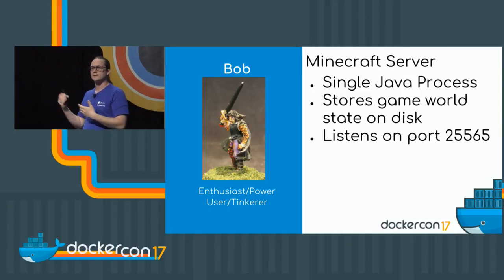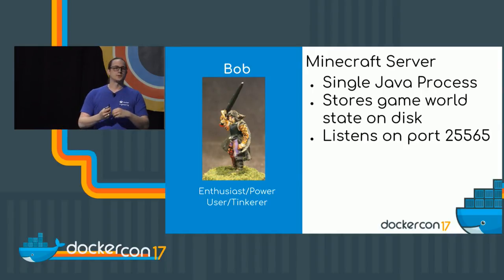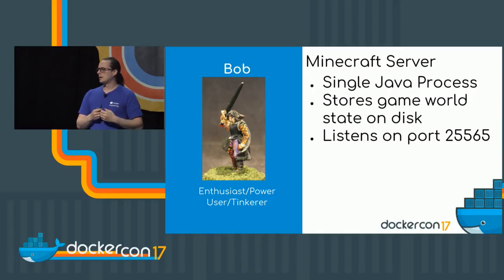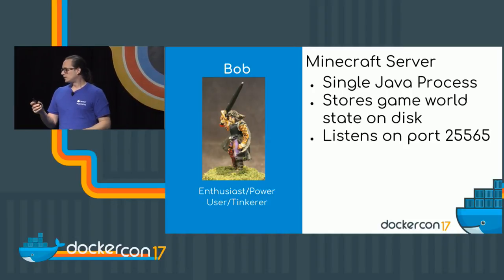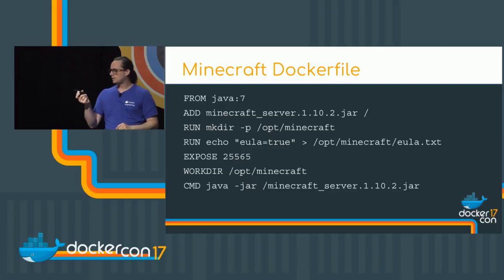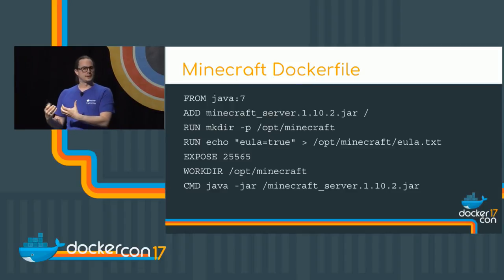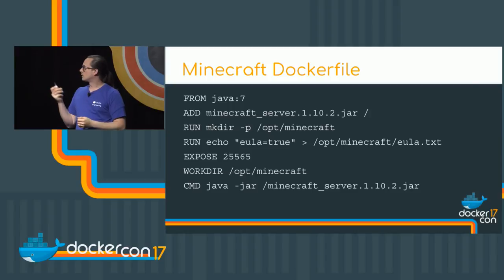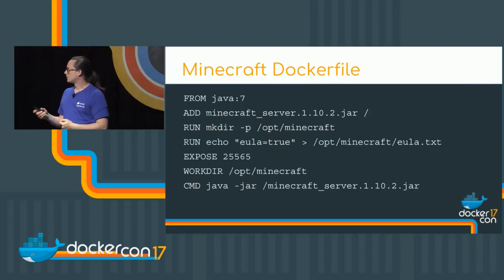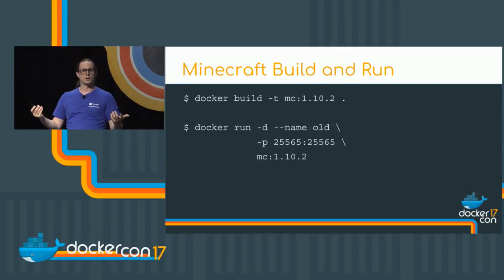Bob and his friends want to play Minecraft together, so Bob decides to Dockerize a Minecraft server. All you really need to know about it is that it's a single Java process, it stores game state data to disk, and it listens for game client connections on port 25565. With that information, we can write a Dockerfile. This is a working Dockerfile for Minecraft — it just takes the jar file, adds it to the Java image, sets EULA true, has a port exposed, a working directory, and a command to start up the Minecraft server. This builds and runs, and we have a working Minecraft server.